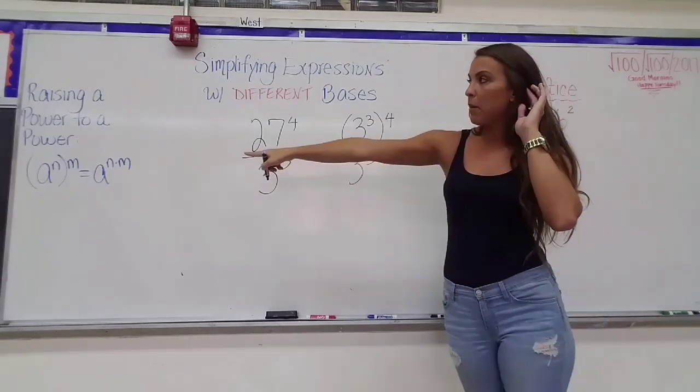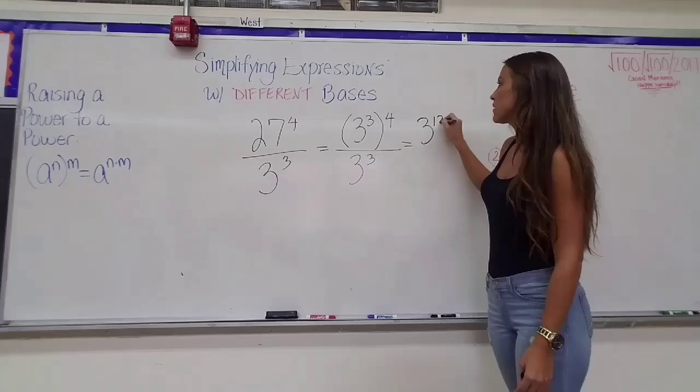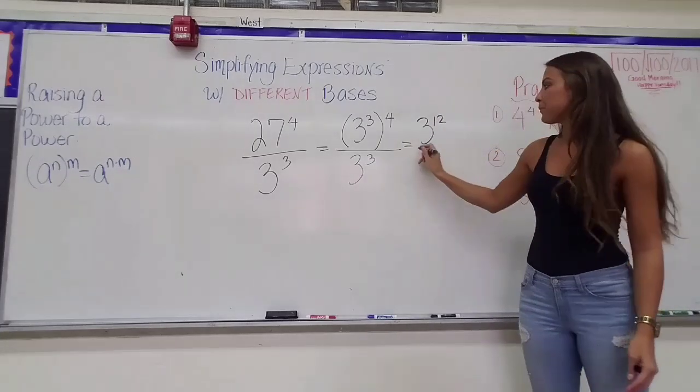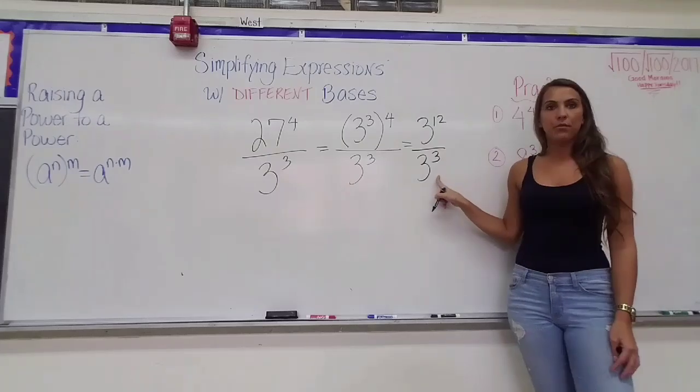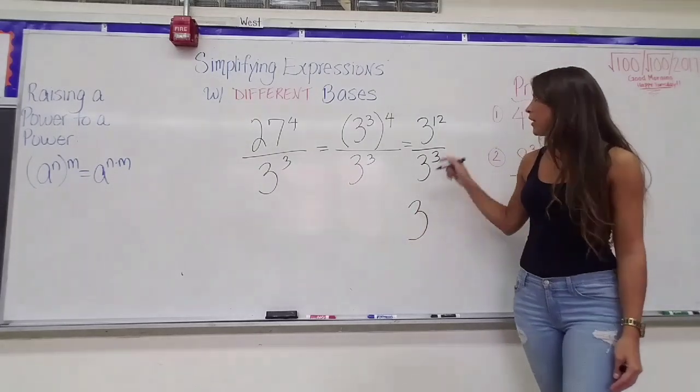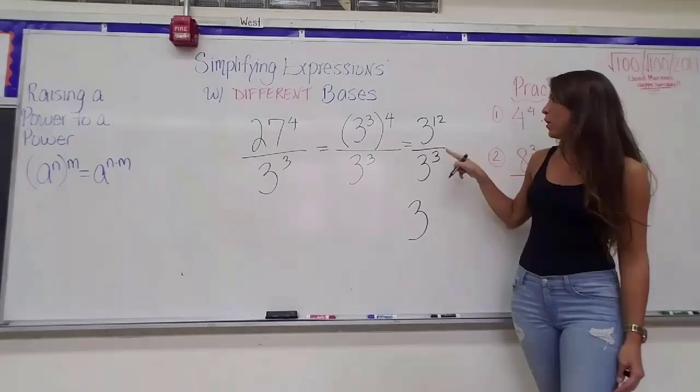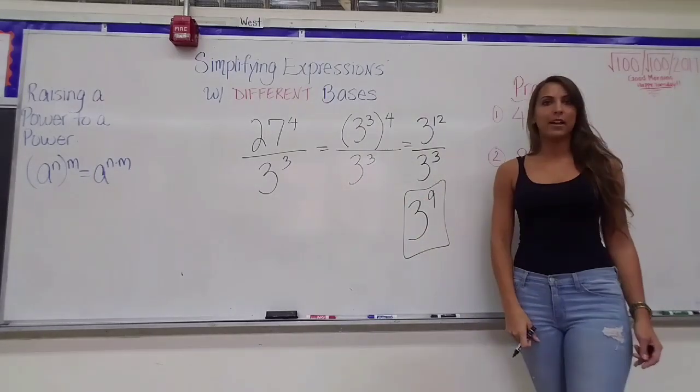So I apply my power to power rule in blue, and I multiply those exponents to get 3 to the 12th power over 3 to the 3rd power. Now you can apply your division law of exponents, because you have the same base. You can keep it, take your exponents and subtract them, 12 minus 3, I get 3 to the 9th power as my answer.